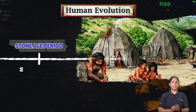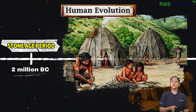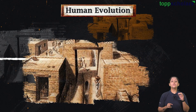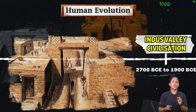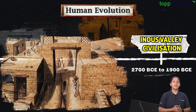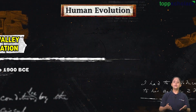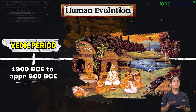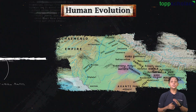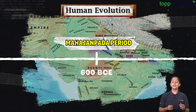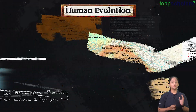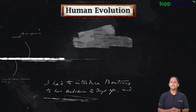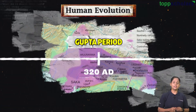The first is the Stone Age period, which started from 2 million BC. Then comes the Indus Valley Civilization, which started around 2700 BCE to 1900 BCE. Later came the Vedic period from 1900 BCE to approximately 600 BCE. The Mahajanapadas period started around 600 BCE, the Mauryan period began in 330 BCE, and the Gupta period began in 320 AD.